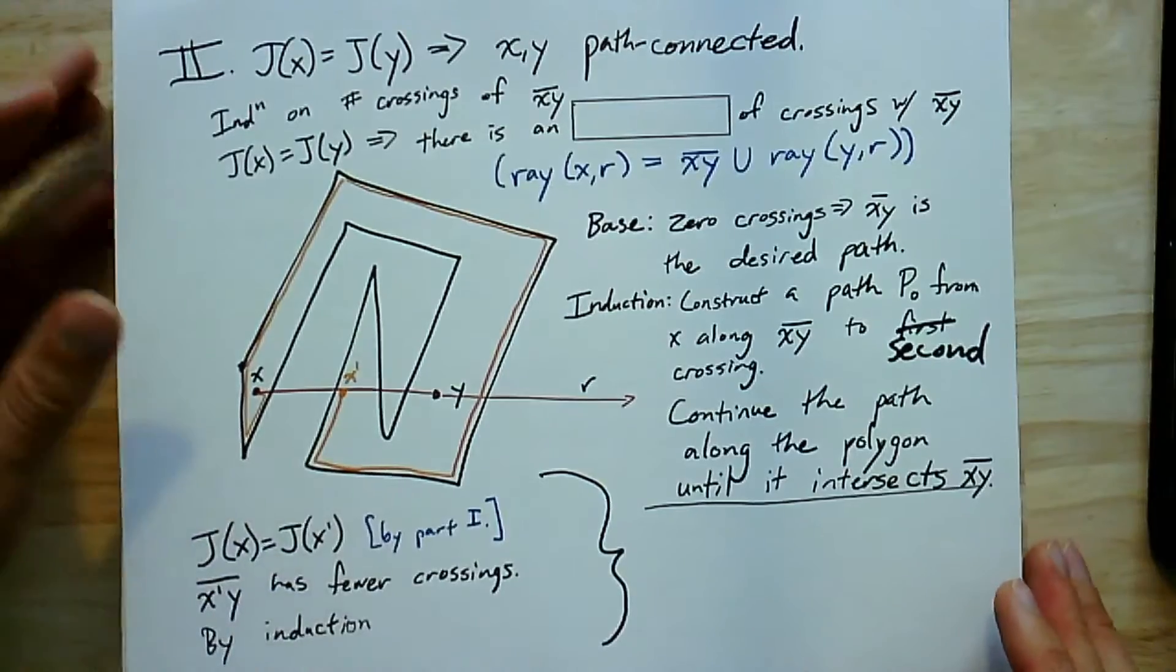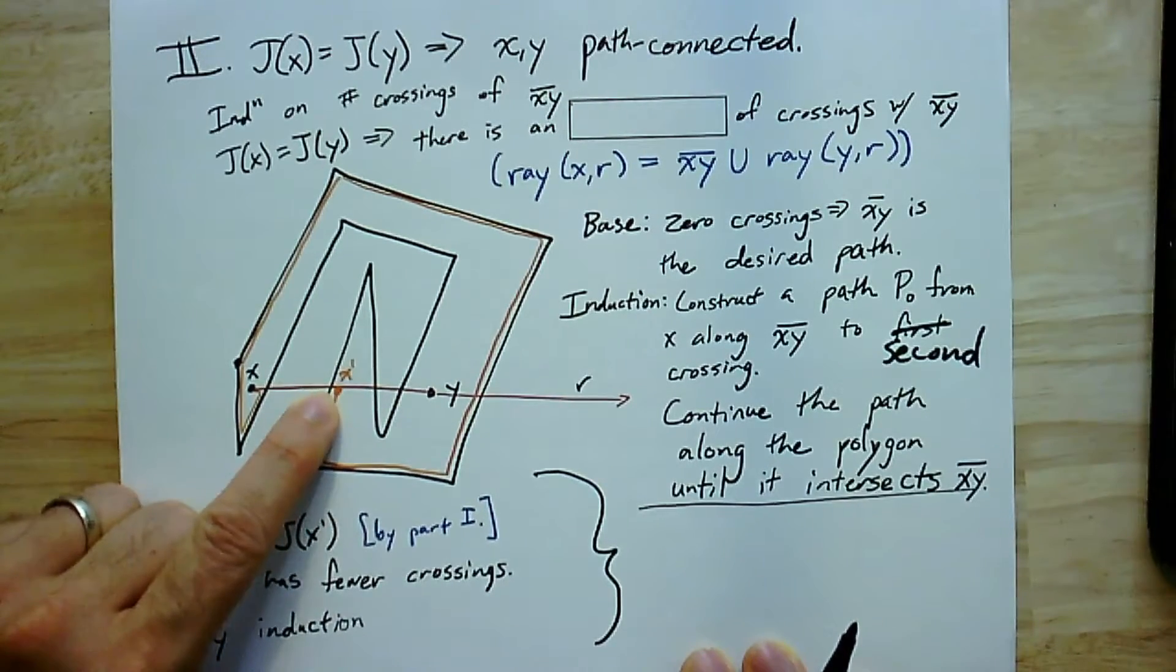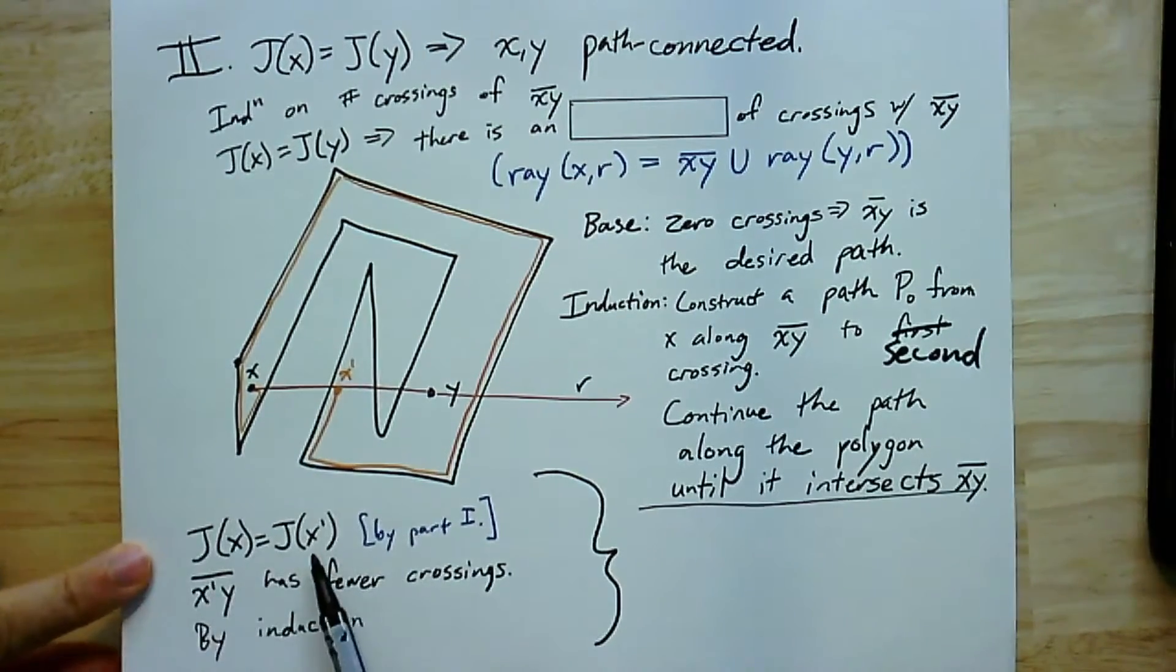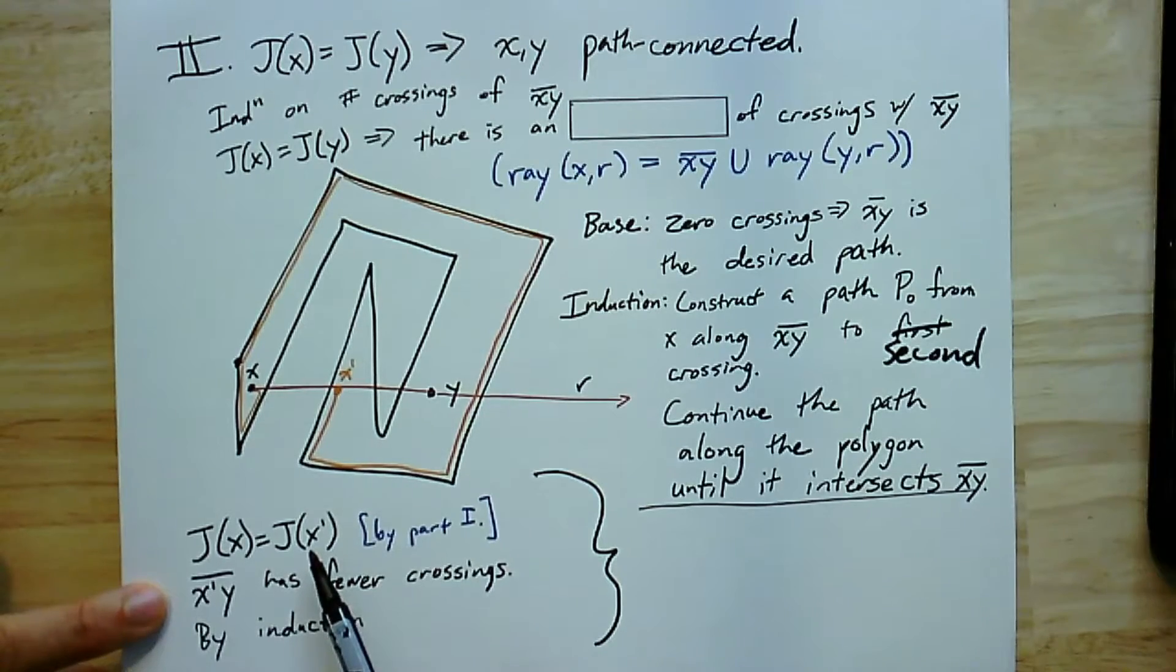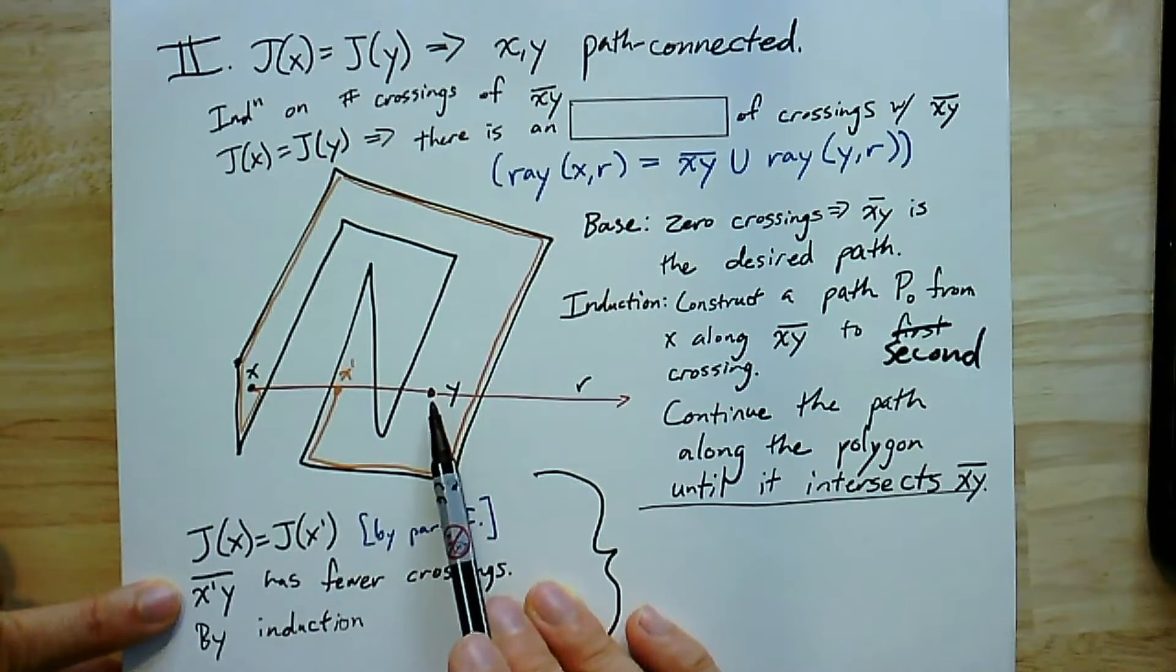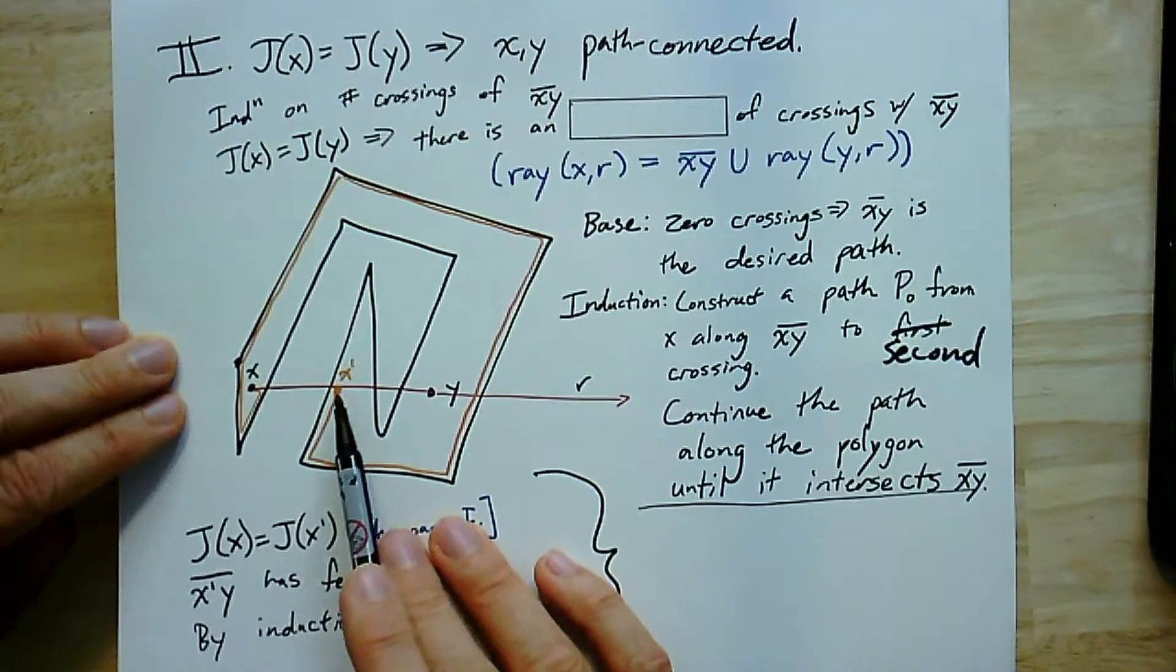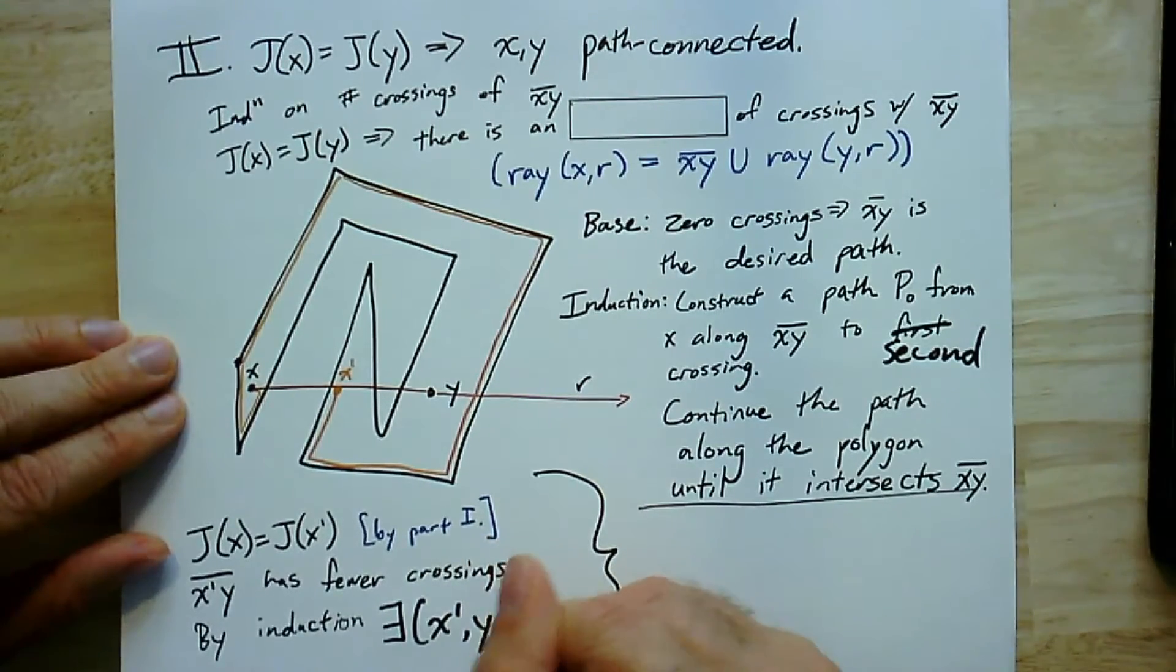Now, so what do we know? We have a path, but we don't know really what side of the polygon we're on here. We have to actually use some other math to prove that this is true. We know, because we've constructed a path from x to x', that j(x) has to equal j(x'). So j(x') is also equal to j(y). That was our main assumption. And so the line segment from x' to y has fewer crossings. Now, because we don't have this first crossing, we got all the way to the next one. So it has fewer crossings. So by induction, there's a path now from x' to y.